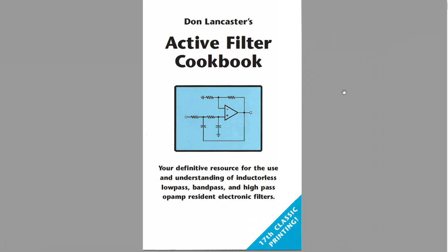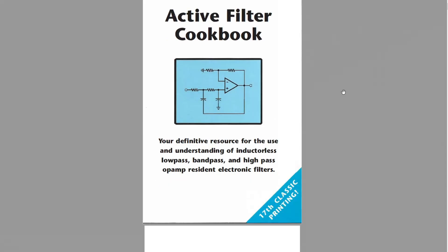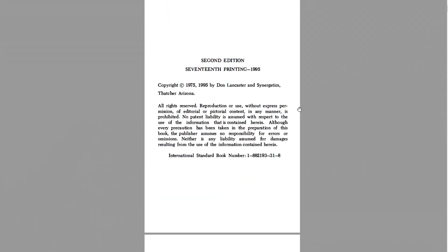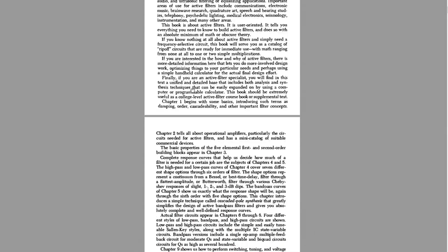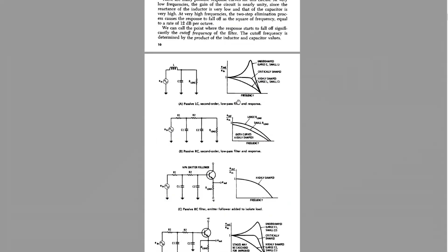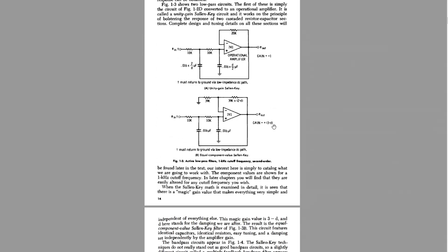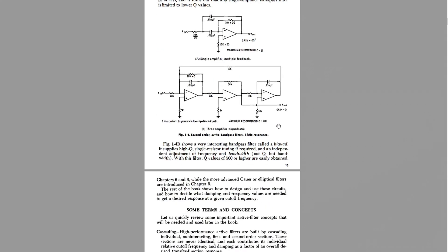Here it is. If you search for Don Lancaster's Active Filter Cookbook, you will find a PDF. There are many sites that have PDFs of this book. It's in the 17th classic printing now. This one was 1995, the original was 1975, so this book's been around a long time. This is a great book, it's free, it's got everything you want to know, and it's written in a way that you don't need an engineering degree. It's very nice. It tells you about shapes of filters, goes into different topologies.